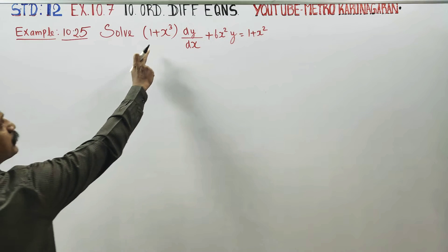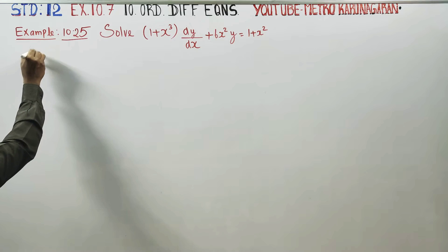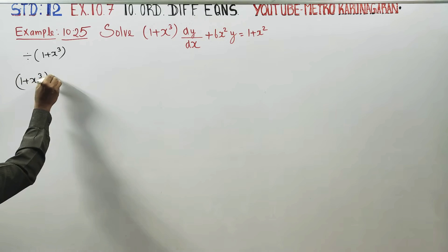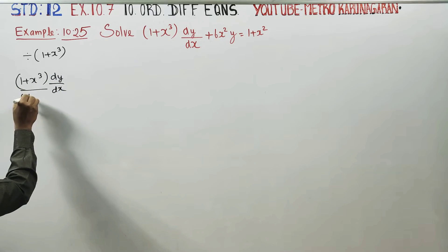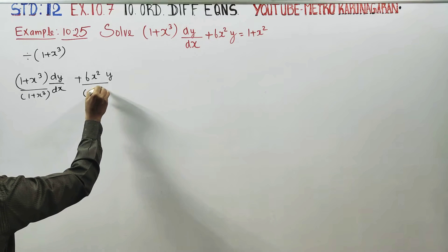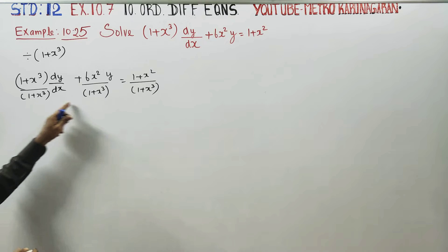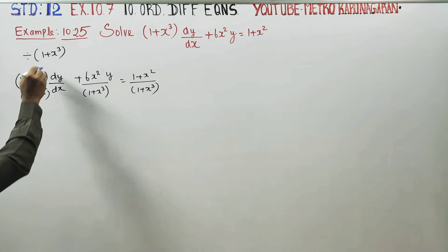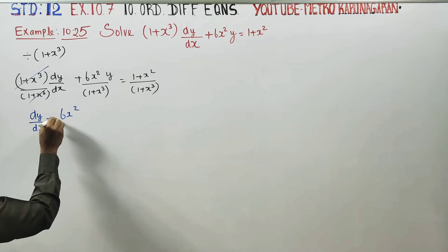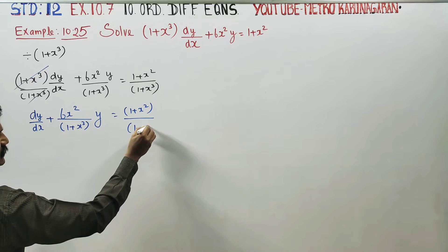First of all, we have 1 plus x cube in the differential equation. Divide all the terms by 1 plus x cube. Dividing through gives us dy by dx plus 6x square divided by 1 plus x cube, times y, is equal to 1 plus x square by 1 plus x cube.